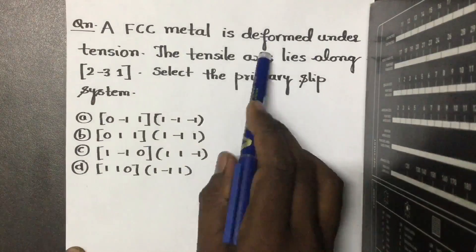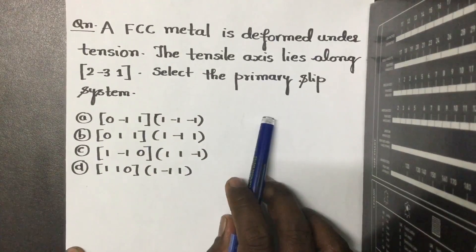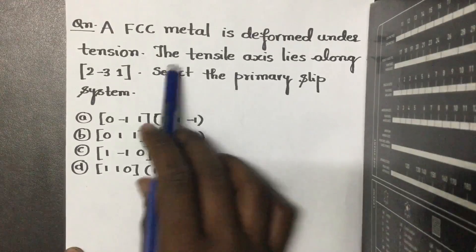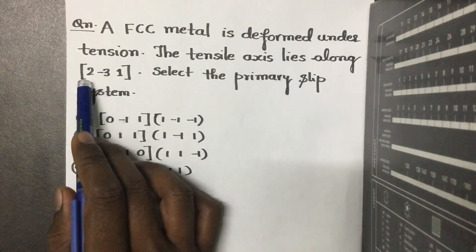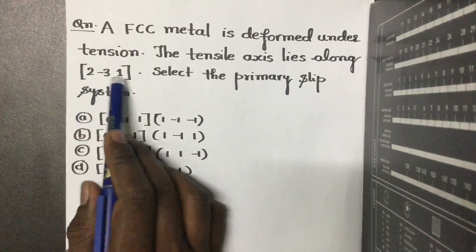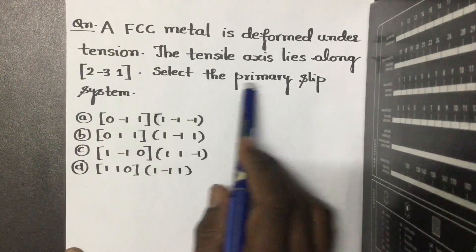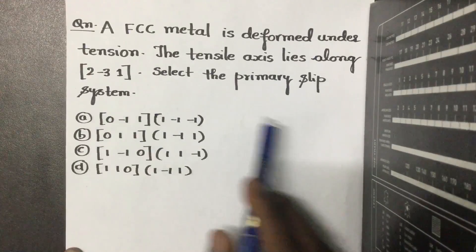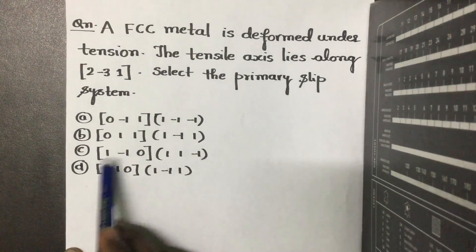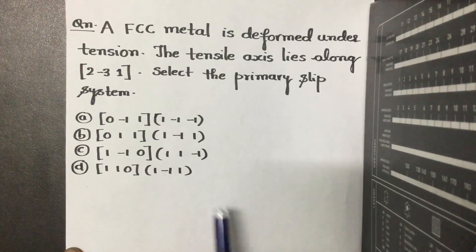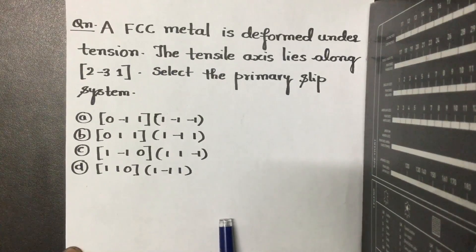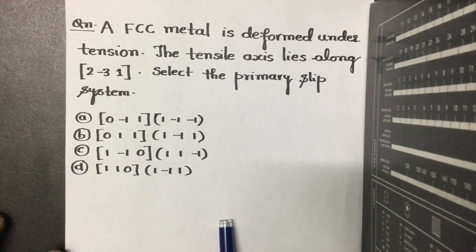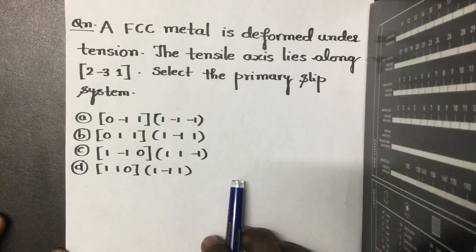So an FCC metal is going to be deformed under tension and the tensile axis lies along [2̄ 3 1]. You have been given four slip systems and you have to select the primary slip system. As you know, slip occurs by dislocation motion.